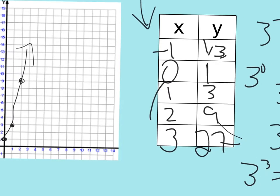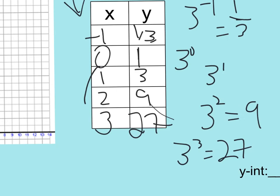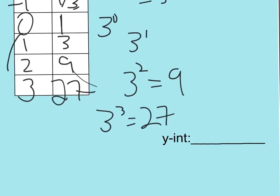Now notice the y-intercept. The y-intercept is where x equals 0. When I plug 0 in for x, I get 1. So the y-intercept is 1 for both of these functions — that's probably going to be the case a lot of the time with basic exponential functions.